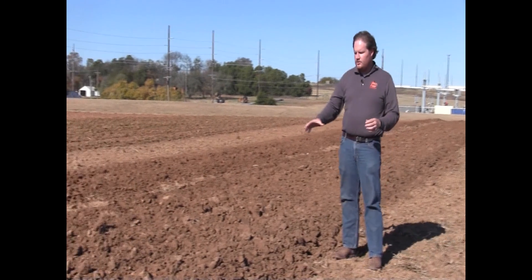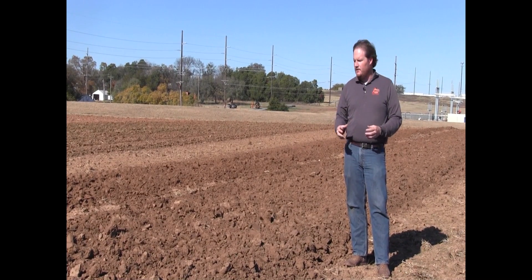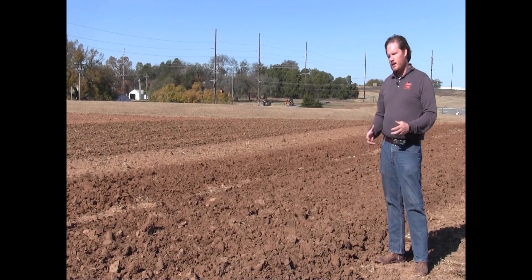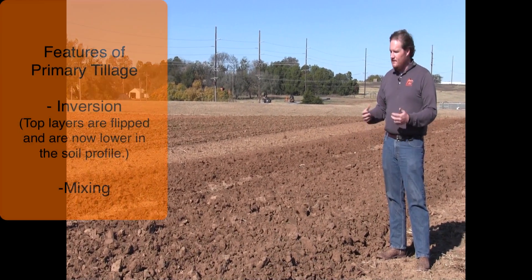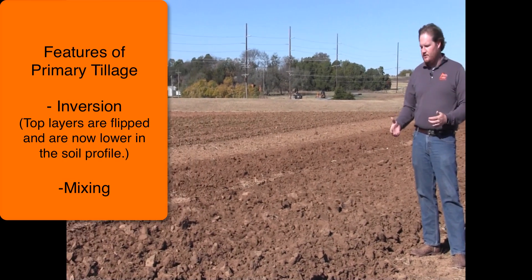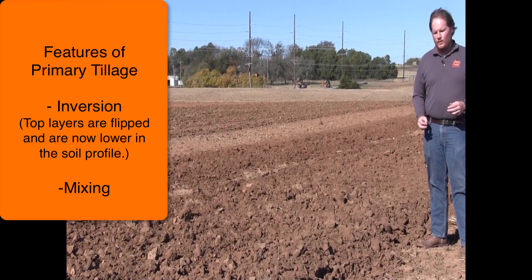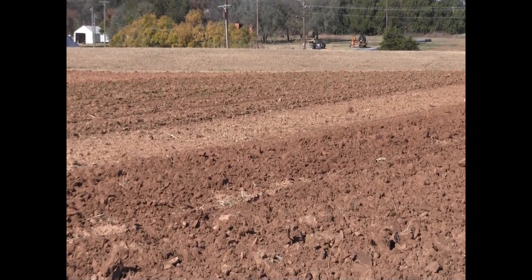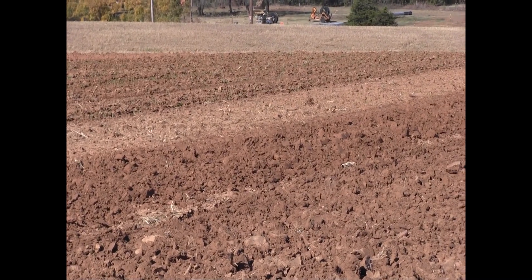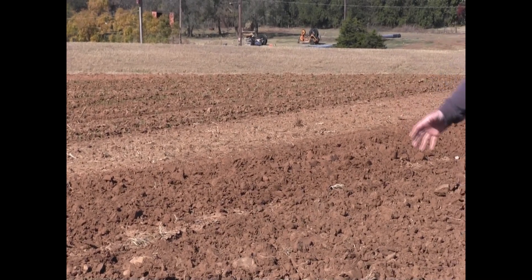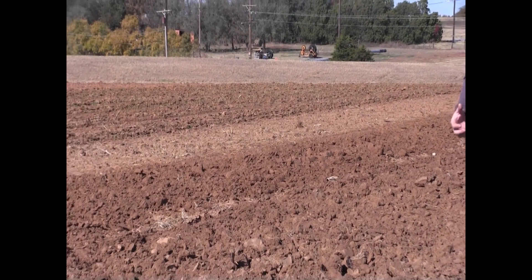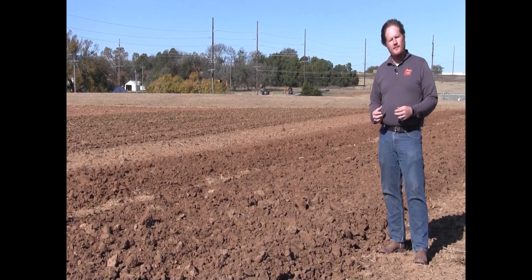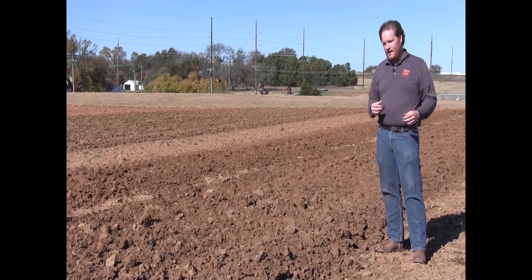When we talk about primary tillage, there are goals specifically suited for it and they can be very valuable to a production system. In primary tillage, we're talking about heavy inversion, a lot of soil mixing, and heavy incorporation of surface residue, which can be quite valuable depending on your production system. But the drawbacks are that you are destructing a lot of your soil surface. If you've been working with no-till or trying to build organic matter, this can be quite destructive. You have to figure out what your end goal is and determine if primary tillage is well suited to match that end goal.